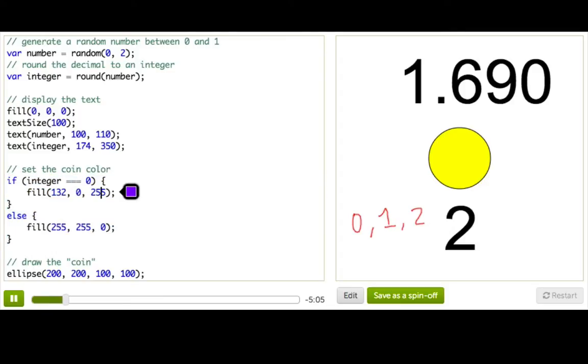So if integer is 0, make it purple, otherwise make it yellow. But now, otherwise could mean either 1 or 2.